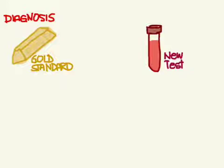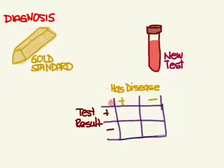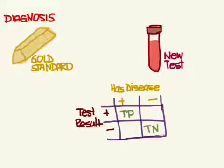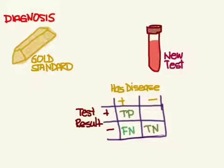This is where we create that two-by-two table, where we have the truth — the gold standard — whether the patient really has disease at the top, with plus meaning they have the disease and minus meaning they don't, and then the test result: positive or negative. If the test says positive and they actually have the disease, that's a true positive. If they don't have the disease and the test correctly says so, that's a true negative. The two error cases are: they have the disease but the test says negative — that's a false negative — and the patient doesn't have the disease but the test erroneously says they do — that's a false positive.